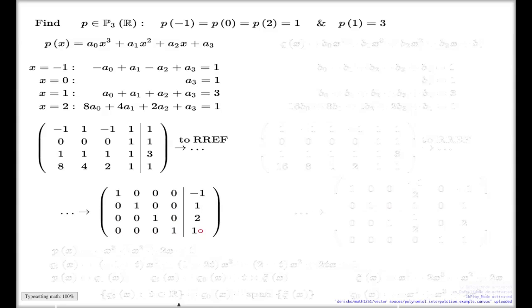Here it is, that is the reduced row echelon form, and that suggests the solution straight away. The a₃ is 1, a₂ is 2, a₁ is 1, and a₀ is -1.